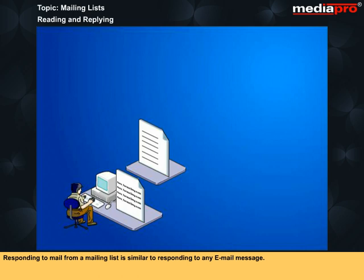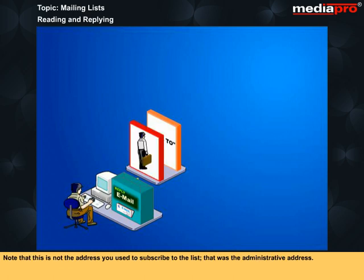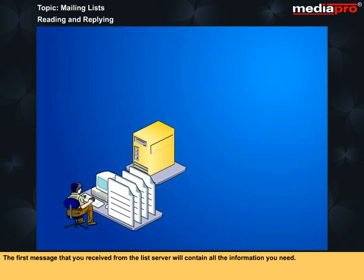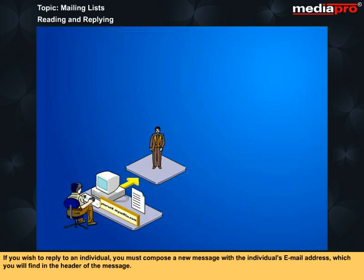Responding to mail from a mailing list is similar to responding to any email message. The reply feature of your email application will insert the list address in the Mail To field. Note that this is not the address you used to subscribe to the list — that was the administrative address. This new address is for the list itself. The first message that you received from the list server will contain all the information you need. You must remember that every reply will be sent to everyone on the list. If you wish to reply to an individual, you must compose a new message with the individual's email address, which you will find in the header of the message.